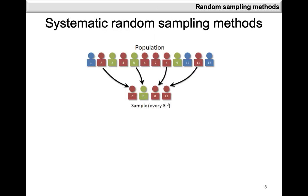The next method is the systematic random sampling method, which does have some advantages over the simple random sampling method. First, it's much simpler to use and more convenient because of how the selection is done. Secondly, if your data is at risk of having been manipulated through ordering, then this method is more of an advantage since we have a random selection point chosen as a starting point. How this method works is that you have a population of elements, you decide what your sample size is going to be, then you calculate a sampling interval which is the population size divided by the sample size. Then you select a random starting point and every kth element after that is included in your sample.